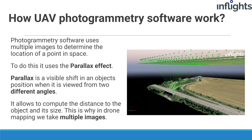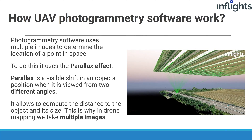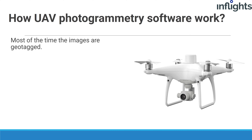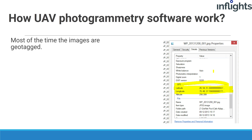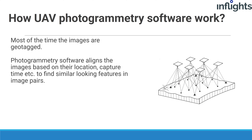This is why in drone mapping we take a lot of images with big overlap. To do this we use a drone equipped with a camera and GPS antenna. Additionally, we can use ground control points to geo-reference the projects in an accurate way. For drone mapping, almost always the images are geo-tagged — the drone records its position when it takes each image based on its GPS receiver data. The photogrammetry software then aligns the images based on their location, capture time, and other data to find similar looking features in image pairs.